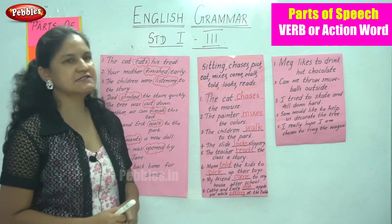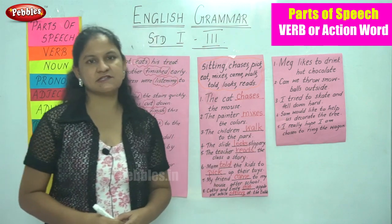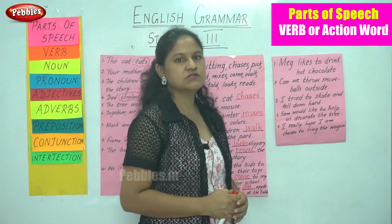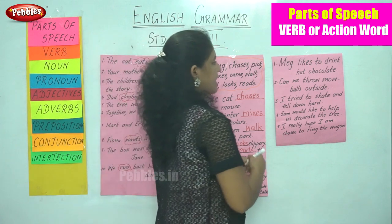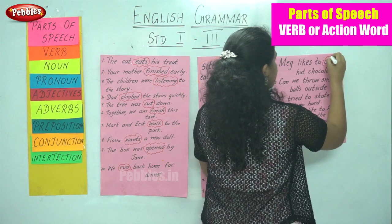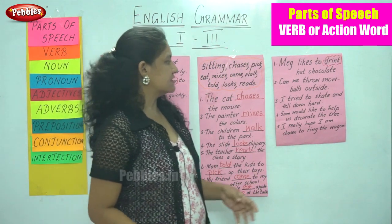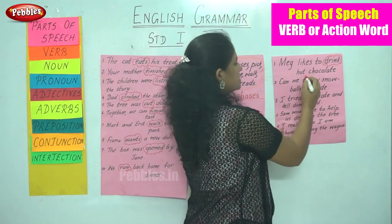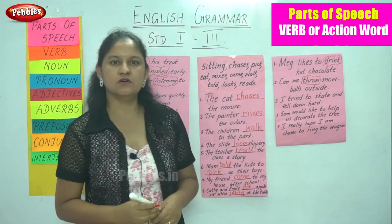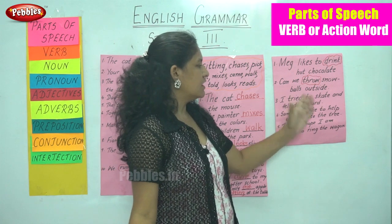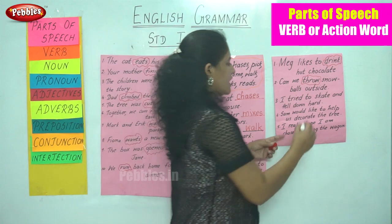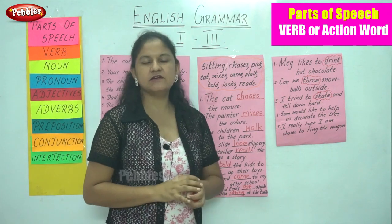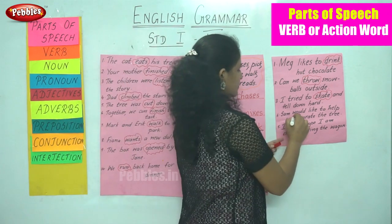We will move on to some more sentences to find the action words. 'Meg likes to drink hot chocolate' — the action word is drink. 'Can we throw snowballs outside?' — throw becomes the action word or verb. 'I tried to skate and fell down hard' — the action is skate. 'Sam would like to help us decorate the tree' — the action is decorate.